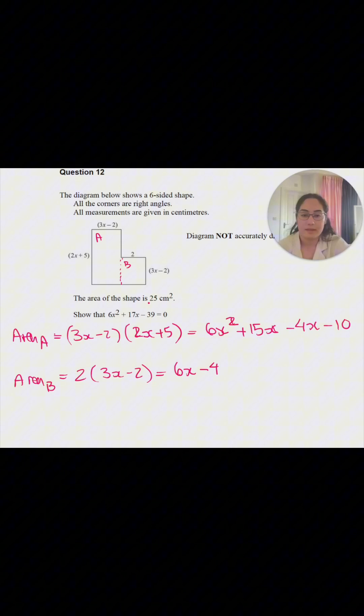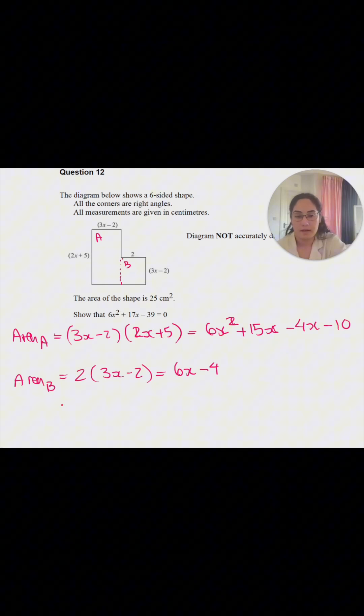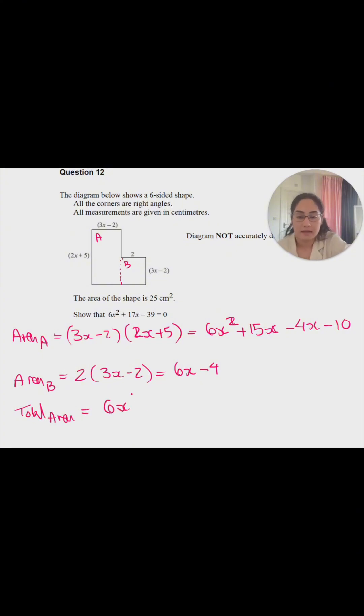Now we know the total area is equal to 25 centimeters squared. To find the total area we're going to add Area A and Area B and that whole thing equals 25. So total area equals 6x² + 15x - 4x - 10 + 6x - 4 = 25 cm².